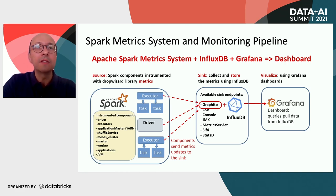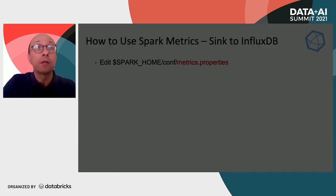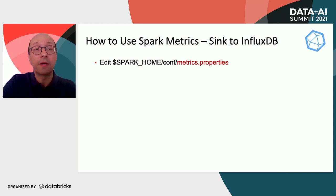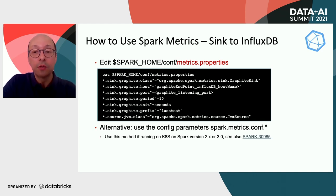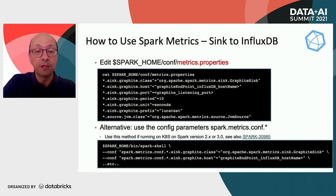This is how you can configure the metric system to sync into a graphite endpoint — simply edit metrics in a properties file. There is an alternative: you can use the spark.metrics.conf parameters as highlighted in this slide.